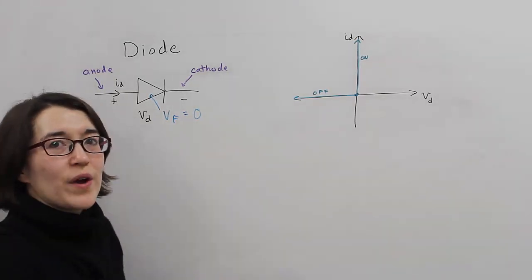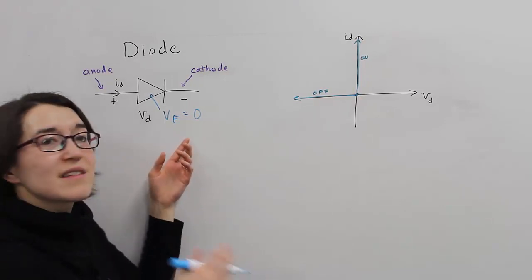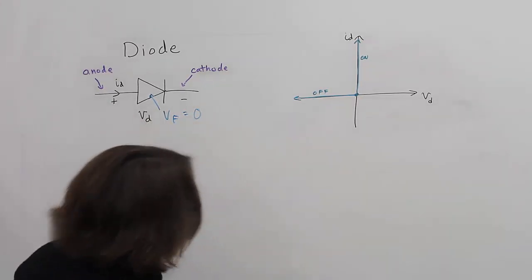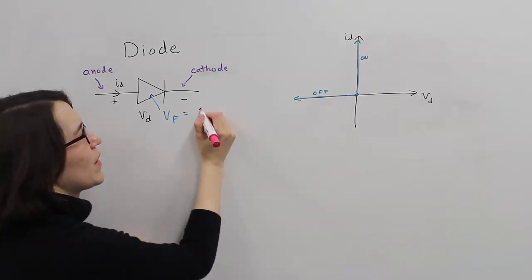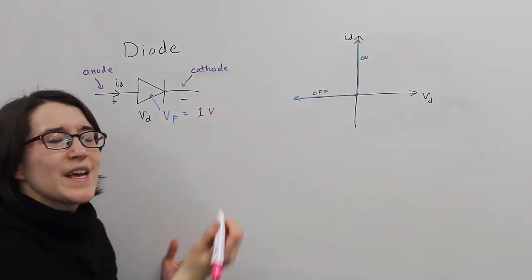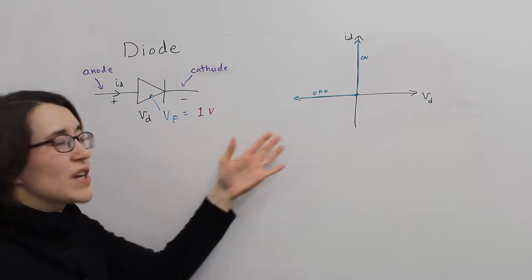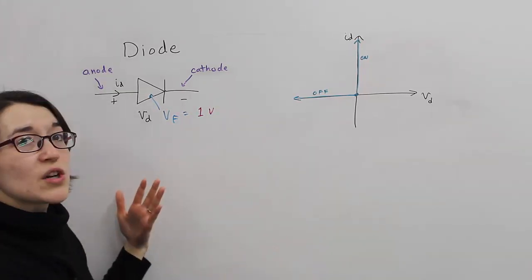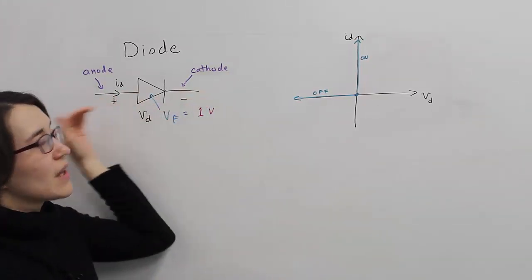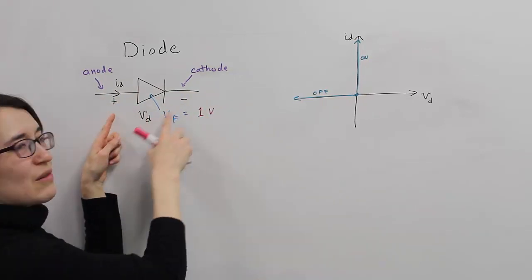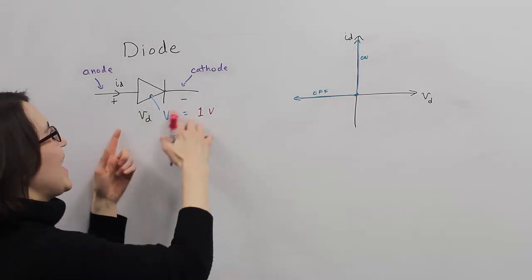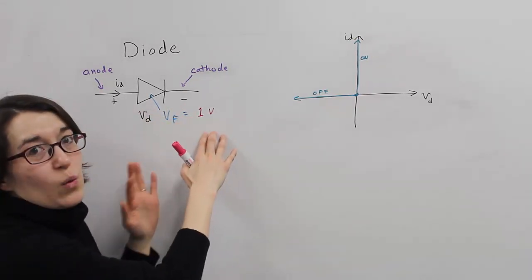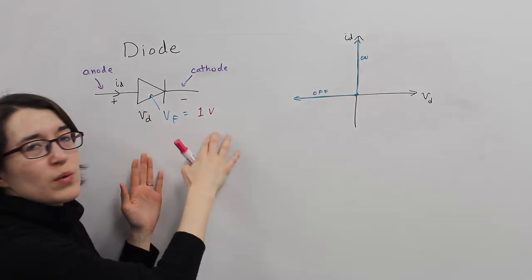There's another case where we assume that there is some forward voltage. So let's change the forward voltage to some value. Let's just say one volt, for example. And this changes our representation a little bit. When current is flowing in this direction, there is a voltage that's here, based on the properties of the diode. And we just estimate that as an ideal one. So one volt, whatever voltage we put here.